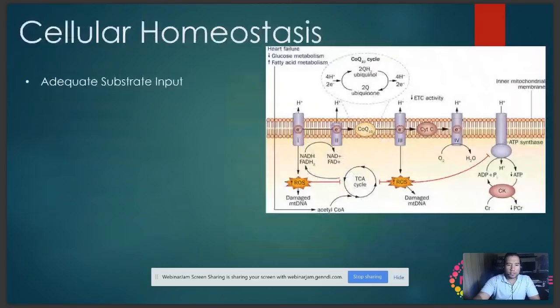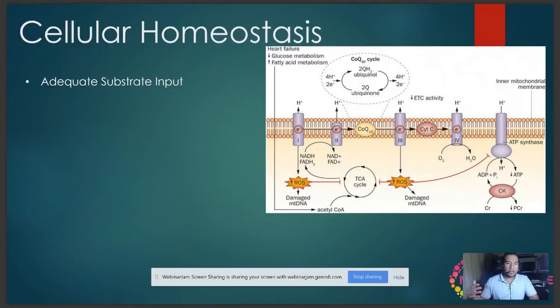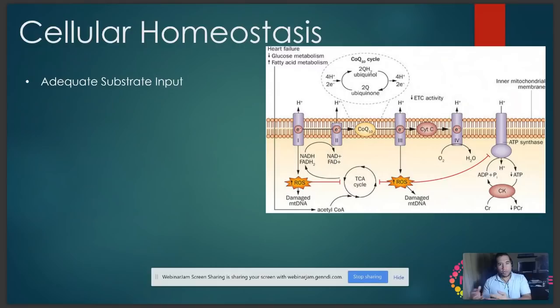ROS production is a major feature of study for numerous chronic illnesses. For cellular homeostasis, the cell has to have adequate substrate input — all the substrates that feed the Krebs cycle and citric acid cycle, which then feed the mitochondria to produce energy. Those substrates include oxygen, water, pyruvate, acetyl-CoA, and all the components that make NADPH and ATP, which is adenosine triphosphate.